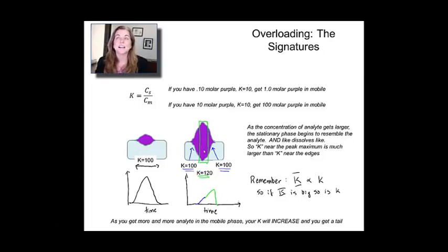But now, let's look if you overload your column. Well, what happens at the peak height is that you've got so much analyte in the column that it starts to look a lot like the analyte. It's kind of like having a sponge that's over-saturated with water. Well, it's going to absorb more water. And when it does that, its partition is actually going to increase.